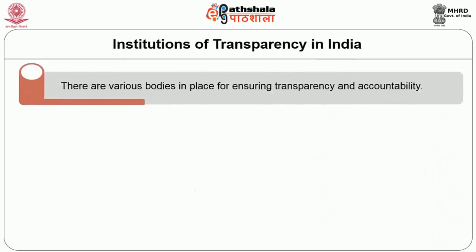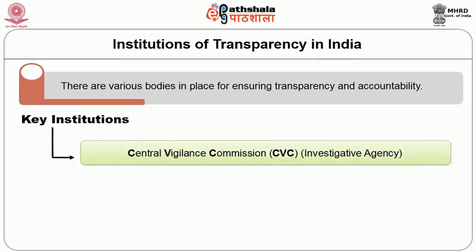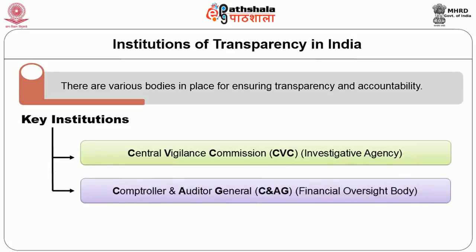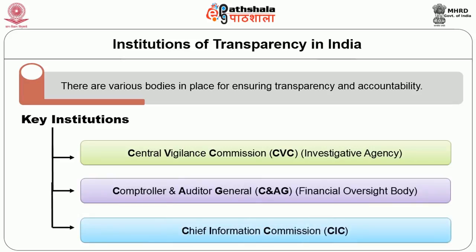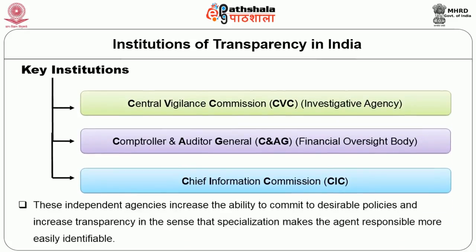There are various bodies in place for ensuring transparency and accountability. At the federal level, key institutions include the Central Vigilance Commission which is an investigative agency, the Office of the Comptroller and Auditor General which is the financial oversight body, and the Chief Information Commission. These independent agencies increase the ability to commit to desirable policies and increase transparency, as specialization makes the responsible agent more easily identifiable.